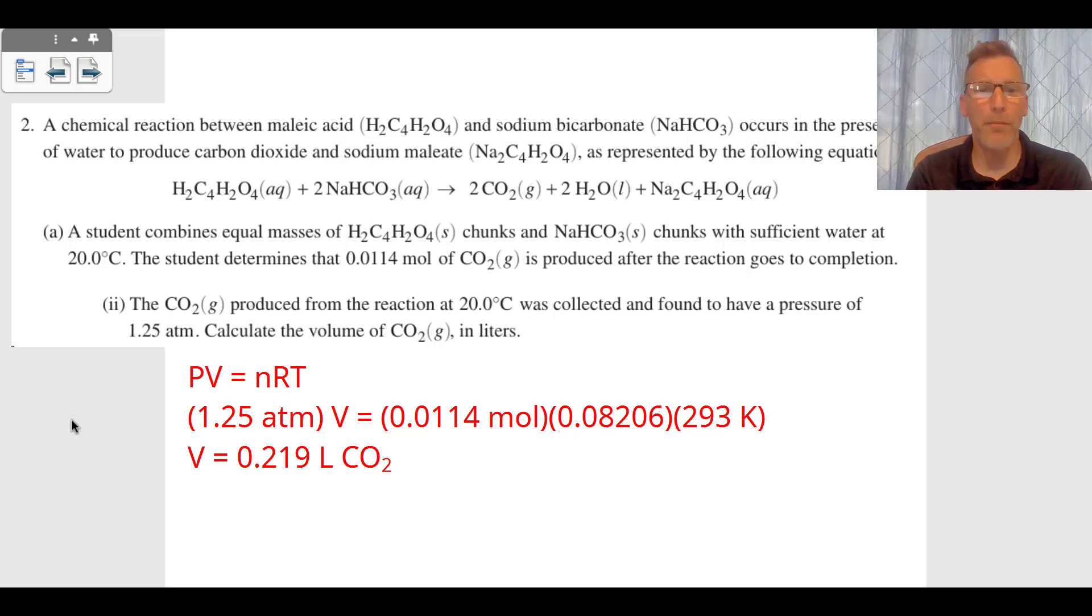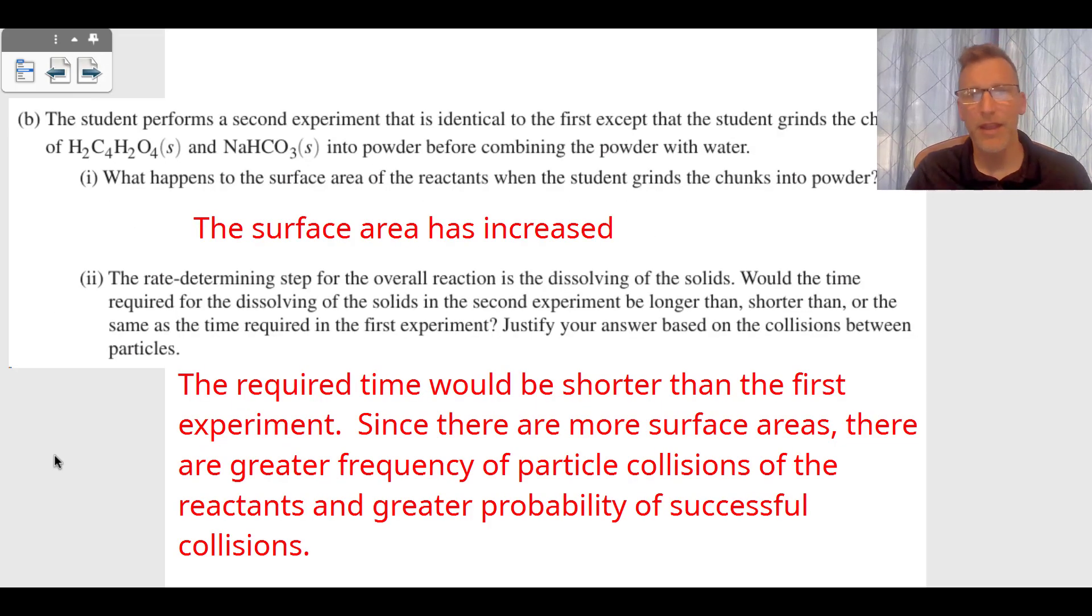We plug in (1.25 atm) × V = (0.0114 mol)(0.08206)(293 K). We have R, the universal gas constant of 0.08206, and the temperature needs to be in Kelvin, so we take 20°C and add 273 to get 293 K. The volume of CO₂ gas is 0.219 liters.